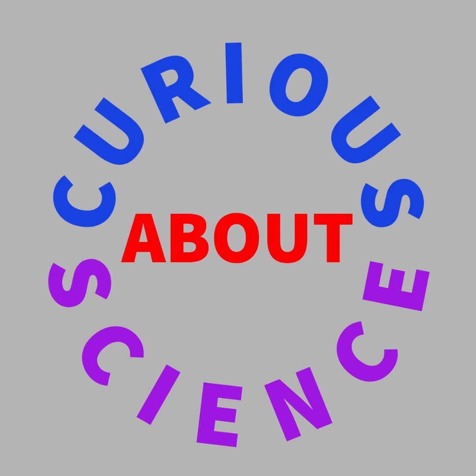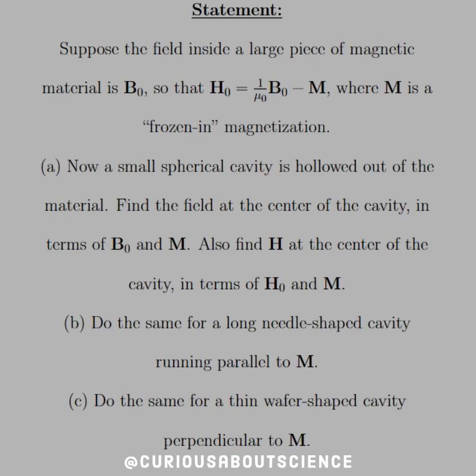Alright, welcome back. Our statement reads: Suppose the field inside a piece of magnetic material is B-naught, so that H-naught, the auxiliary field, is equal to 1 over mu-naught B-naught minus the magnetization M, where M is the frozen-in magnetization.